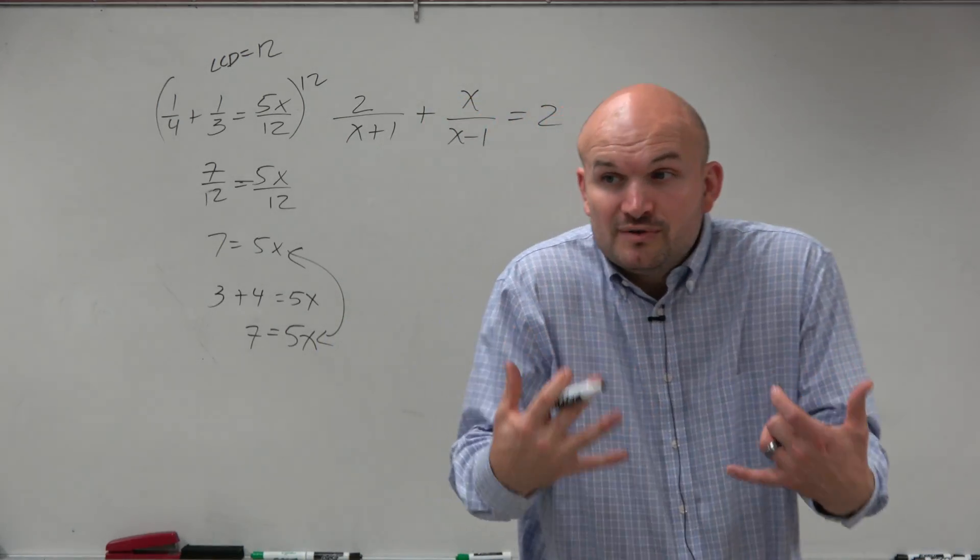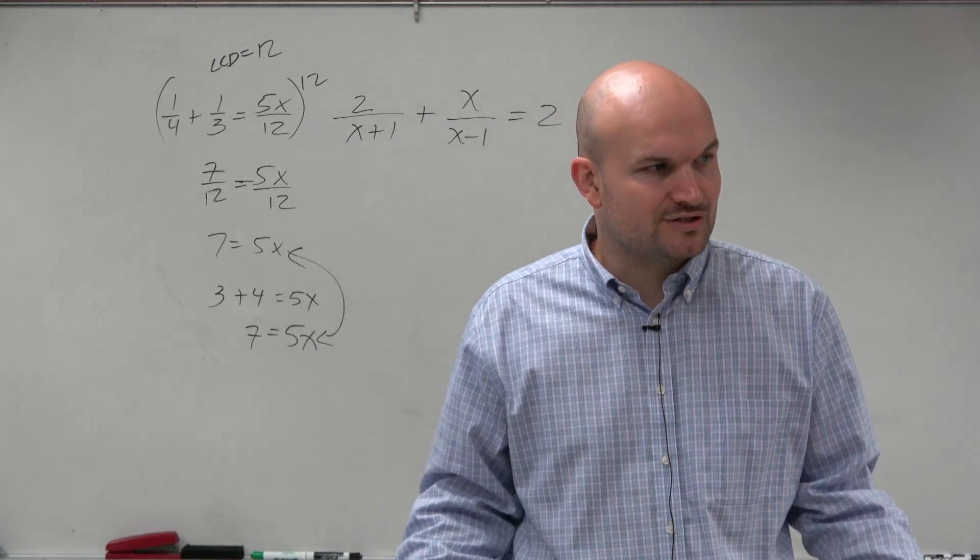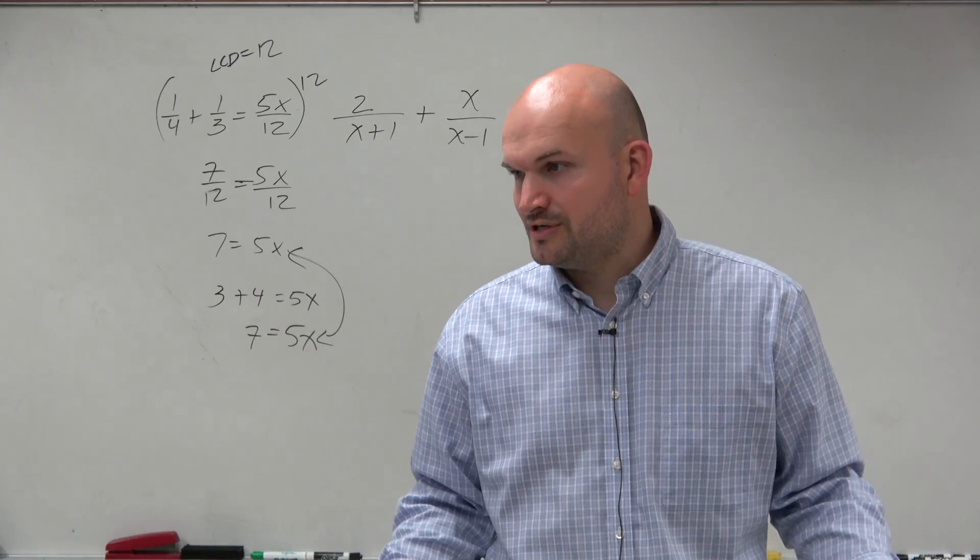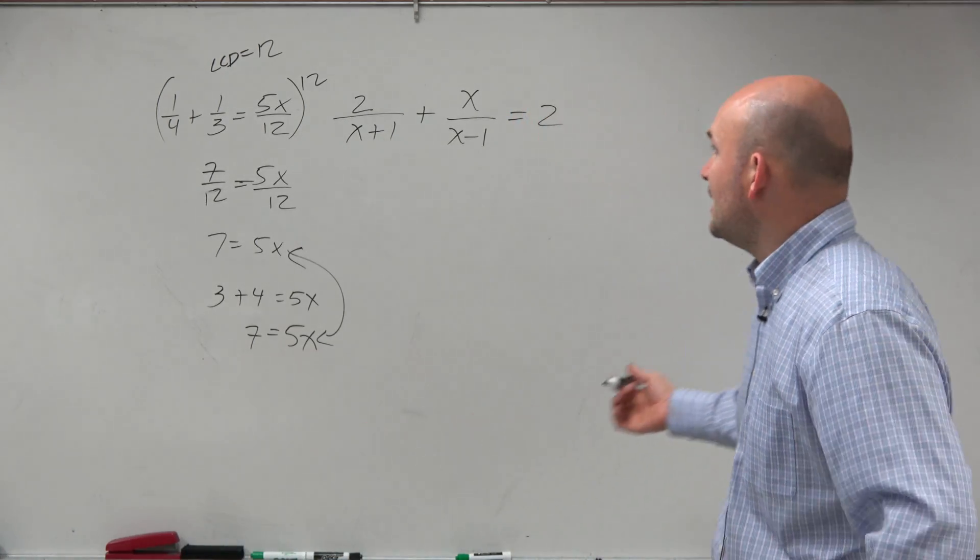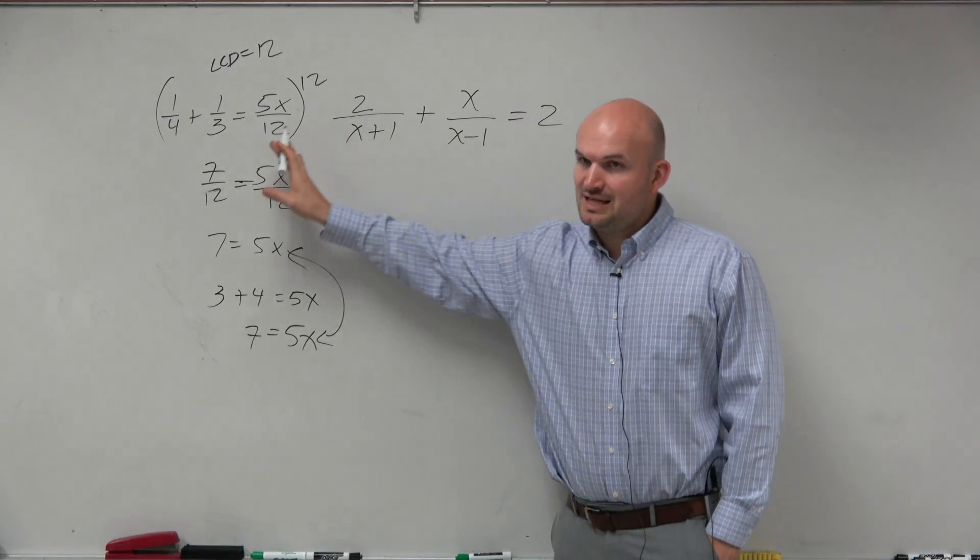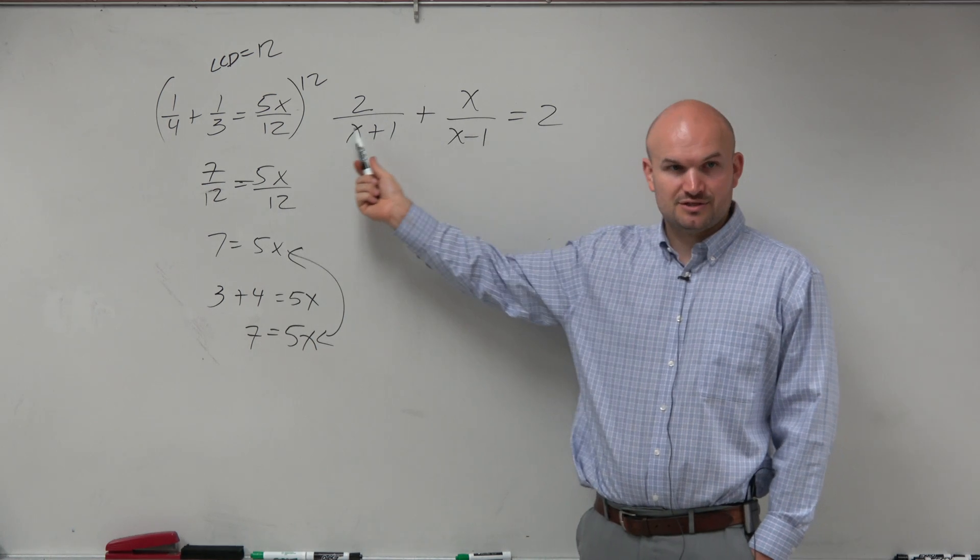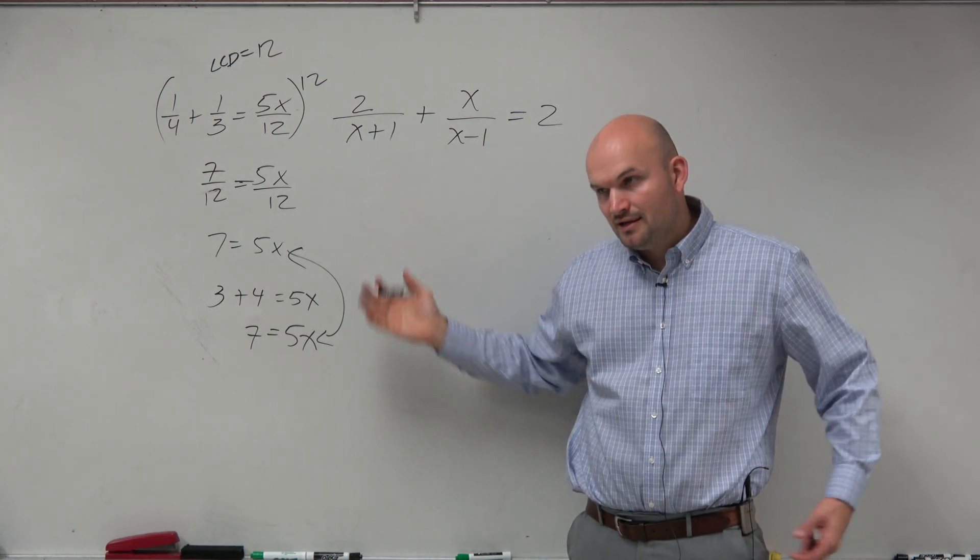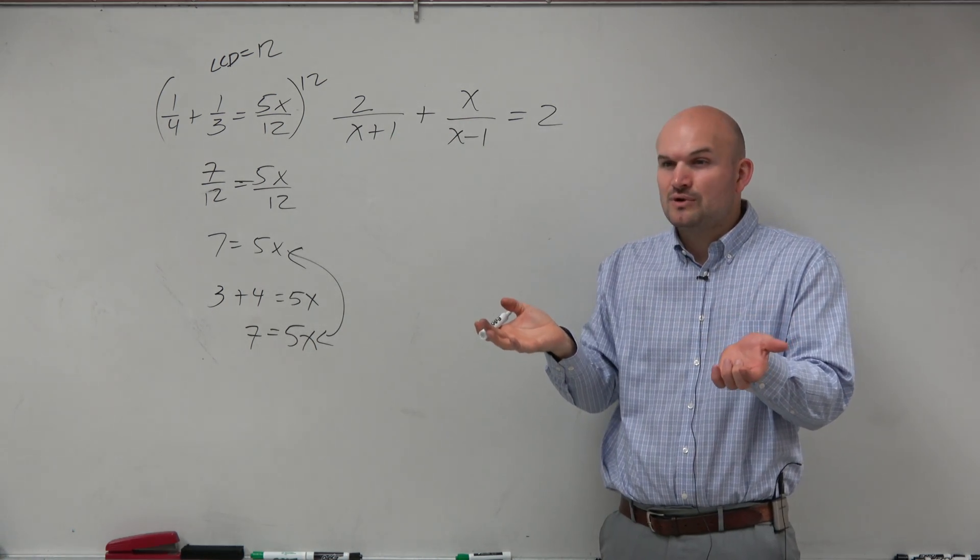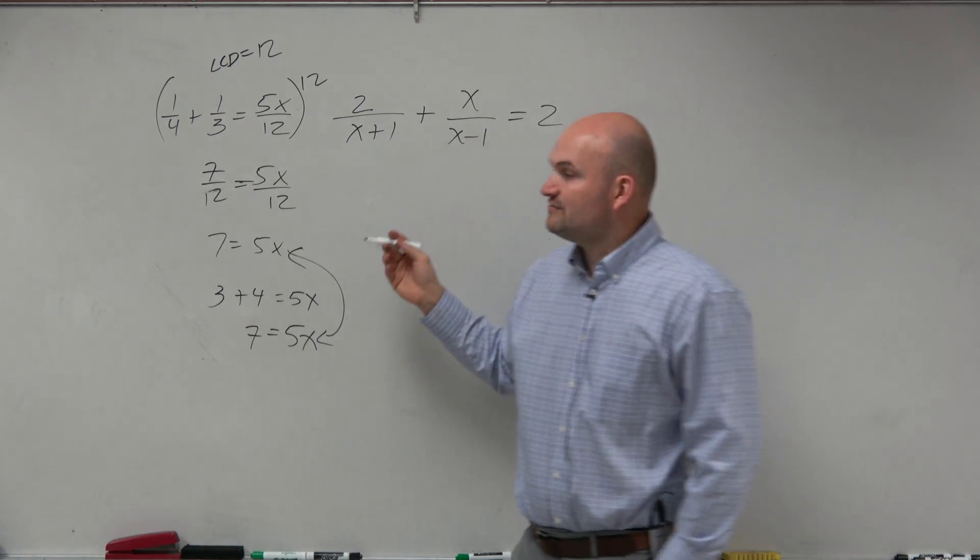Now, I prefer to do that method because I'm getting rid of the fractions. I don't want to do fraction operations. So again, we learned last class period how to add rational expressions, find the LCD and then get them together. But why go through all those steps, guys?